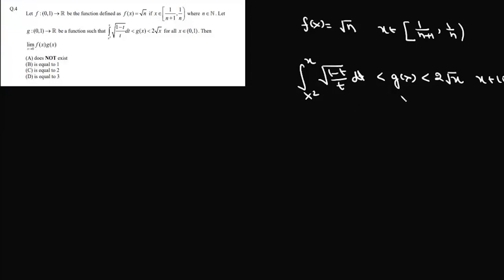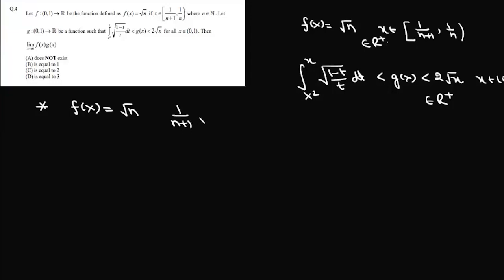Now g(x) is a positive number, and f(x), since it involves a positive square root, is also a positive number. So both f(x) and g(x) have non-negative range. We have defined f(x) as √n when x lies between 1/(n+1) and 1/n.